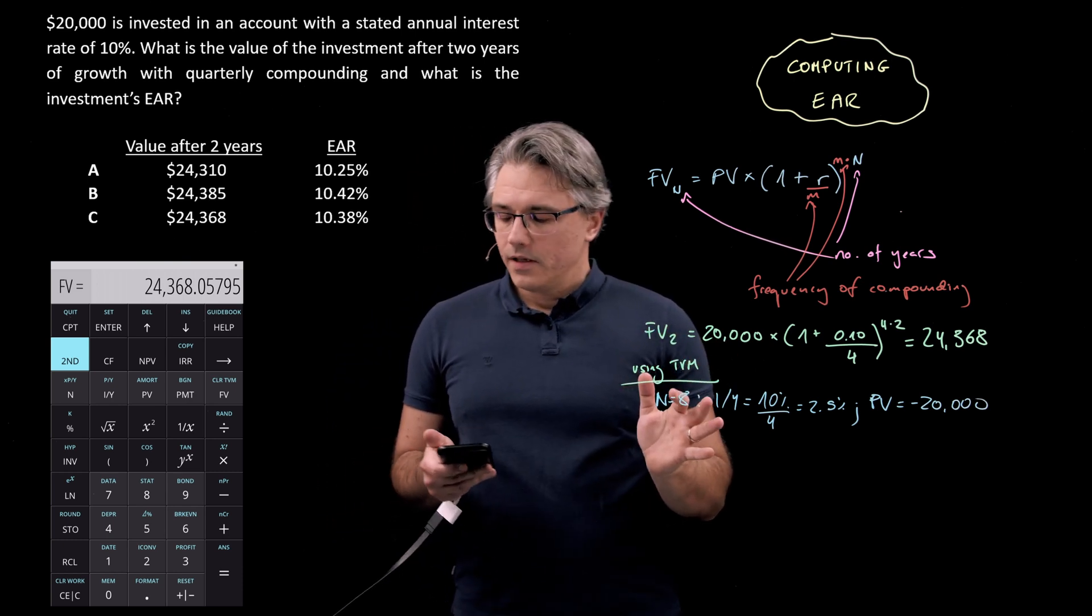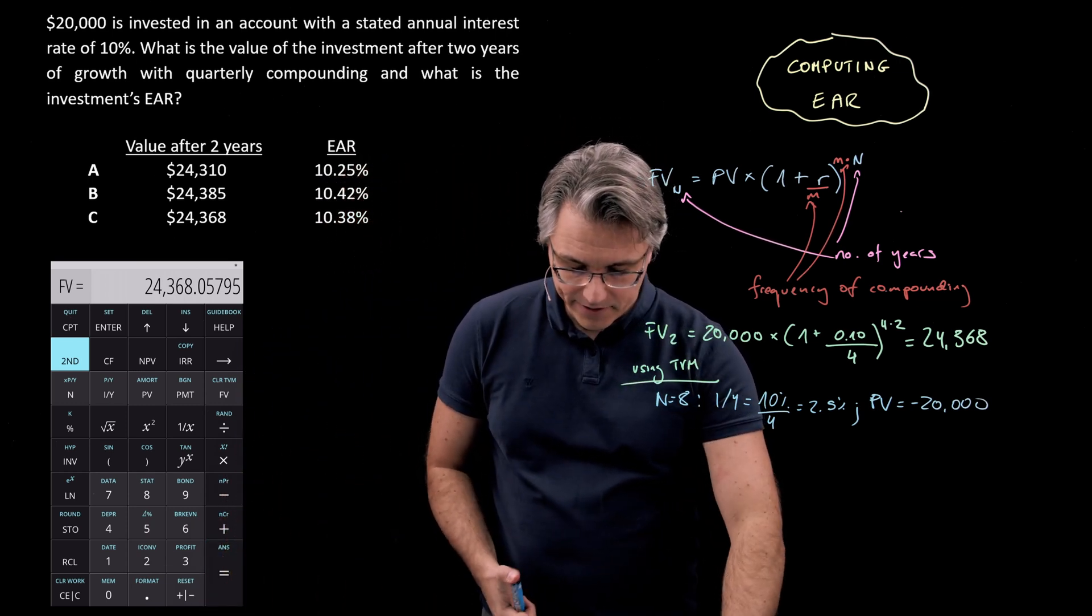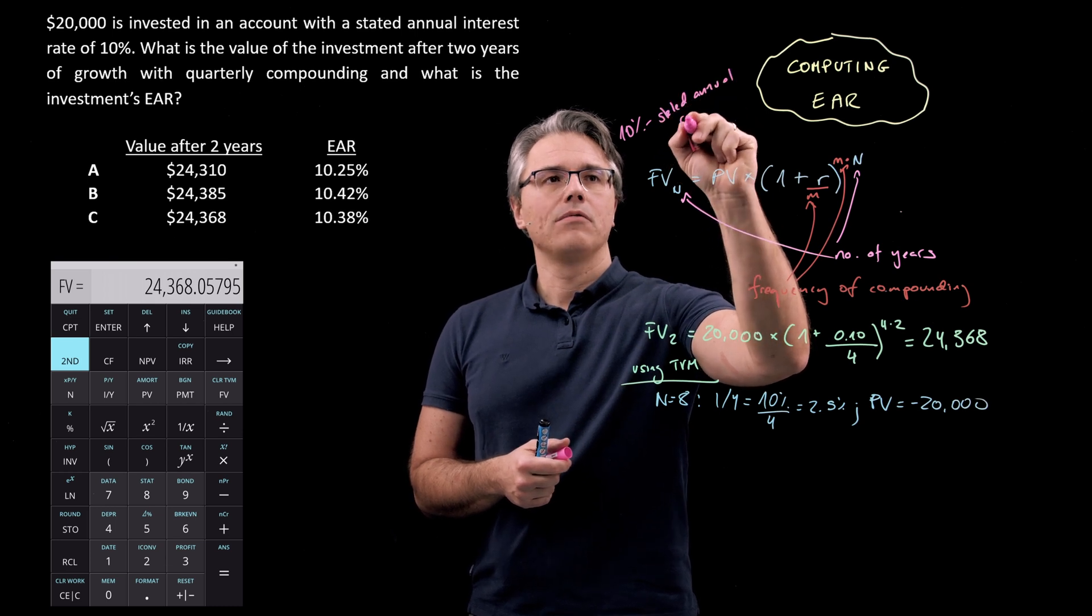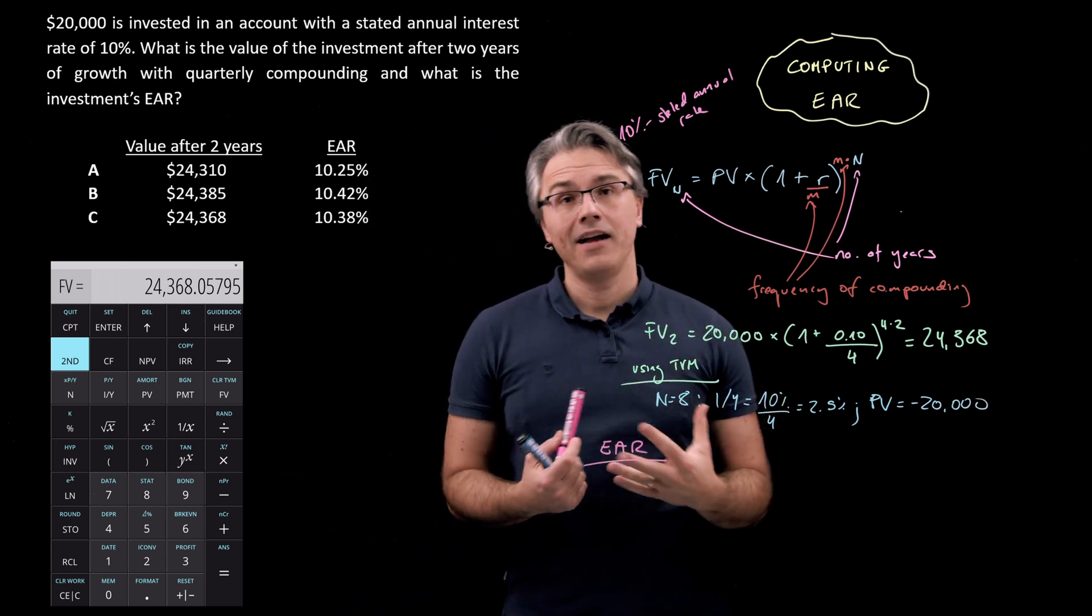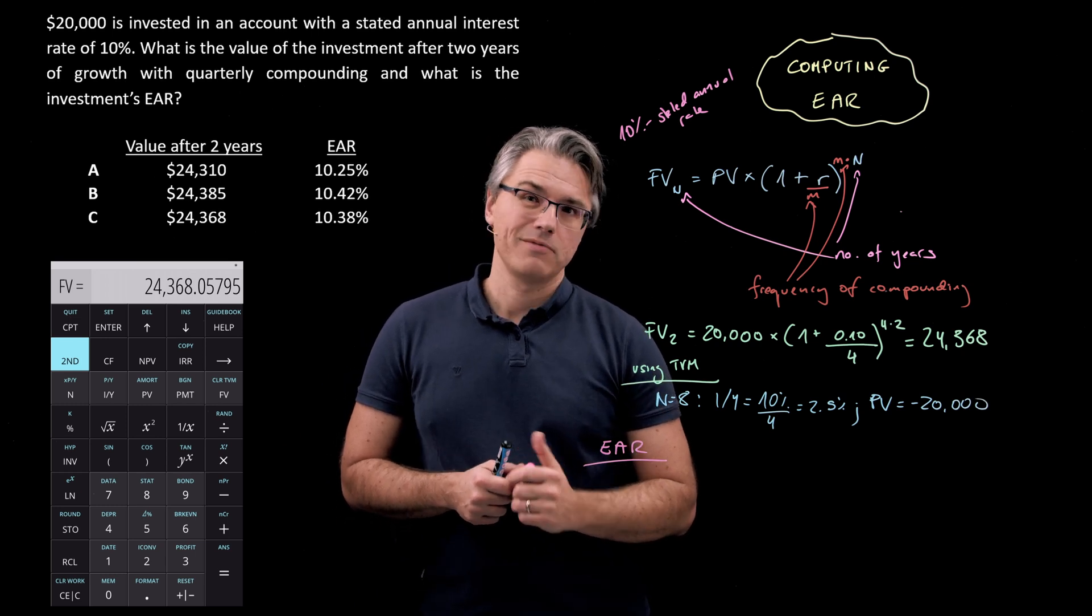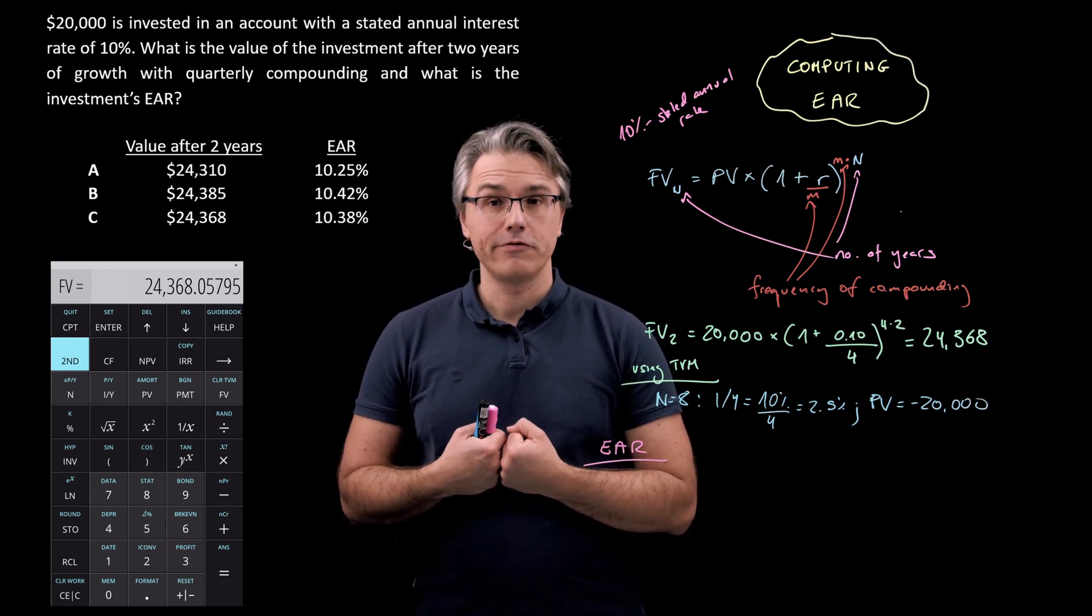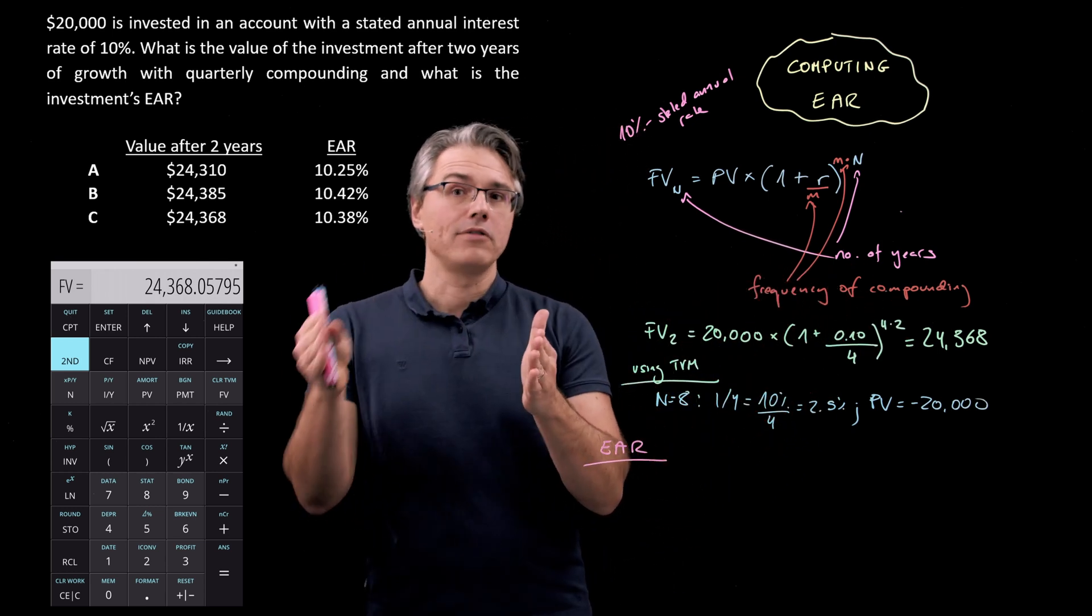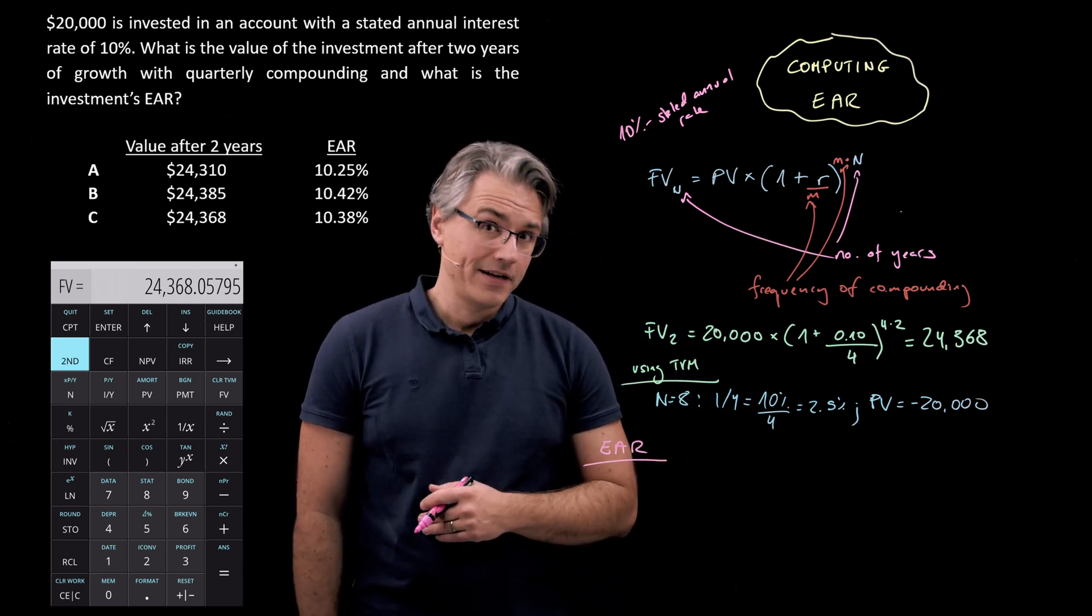That's part of the question. Now in the second part we're asked for the EAR the effective annual rate. The 10 percent which we've got provided in the question is the stated annual rate. The EAR is all about finding the annual rate of interest which would provide us with the same outcome assuming compounding with an annual frequency so once per year. What is this equivalent to in terms of a rate where the compounding happens only once a year?